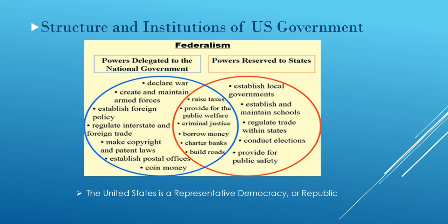The US government is divided into three branches: the legislative, the executive, and the judicial. Now, the United States has a unique system that works well here in our country — other countries have similar systems, but ours tends to work fairly well. This is the concept of federalism: powers delegated to the national government and powers delegated to the states. The national government has the power to declare war, create and maintain armed forces, establish foreign policy, regulate interstate and foreign trade, make copyright and patent laws, establish postal offices, and coin money.